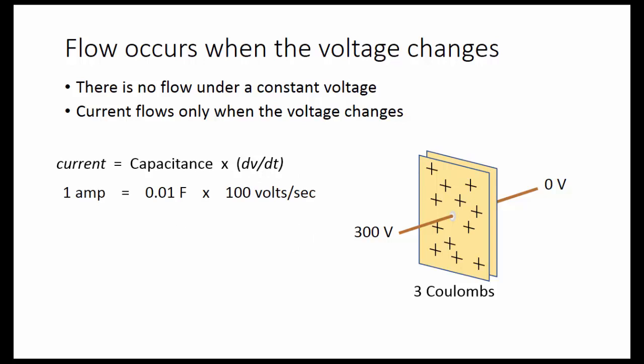When we increase the voltage by 100 volts per second, we got an inflow of 1 coulomb per second or 1 amp.